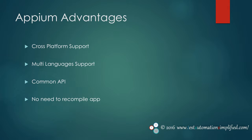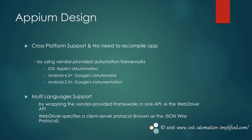So how does APM manage to provide all these features? To answer this, we need to understand APM design. APM uses Apple's UI Automation and Google's UI Automator testing framework to automate apps on their respective platforms. So there is no APM-specific code to compile. APM meets the multi-language requirement by wrapping the vendor-provided frameworks in one API, that is the WebDriver API.